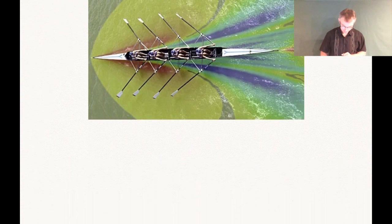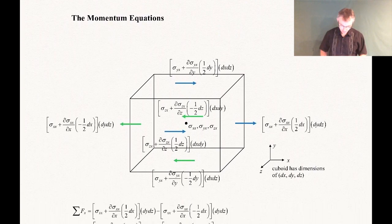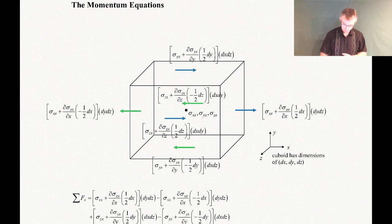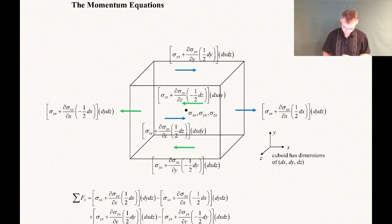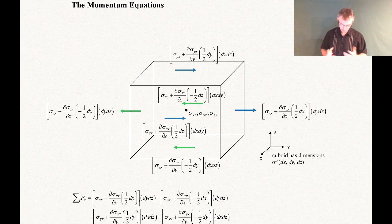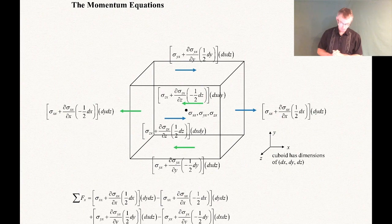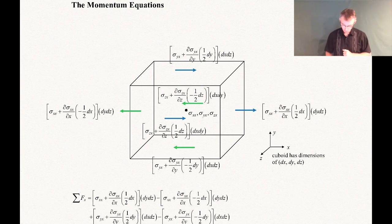On the screen is a small control volume. We've shrunk the control volume to a very small size so it has dimensions of dx, dy, dz. You can see our coordinate system — dx, dy, and dz is out of the page. What I've shown in this picture are all the surface forces acting on that cube in terms of stresses in the x-direction. At the center, the stresses are sigma_xx, sigma_yx, and sigma_zx — these all point in the x-direction.